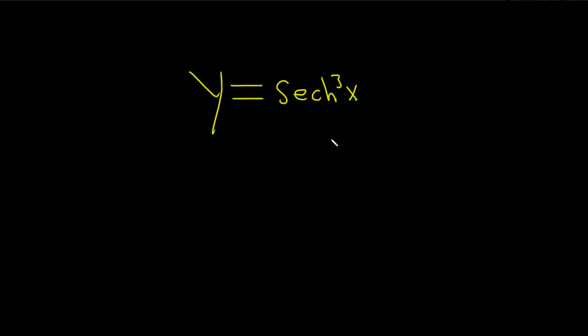In this problem, we have to find the derivative of the hyperbolic secant cubed of x. So maybe we'll start by writing it like this. This is really parentheses hyperbolic secant of x, and this whole thing is cubed.